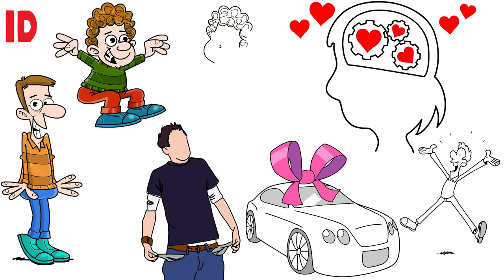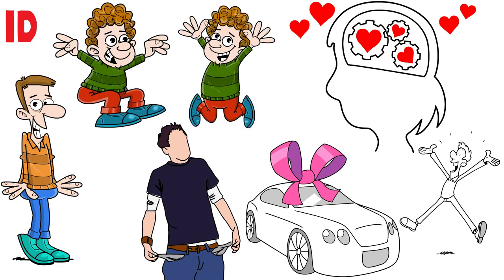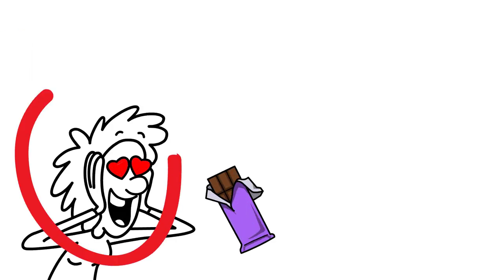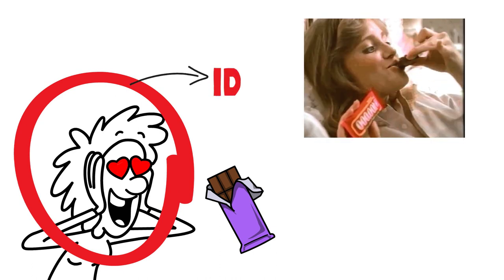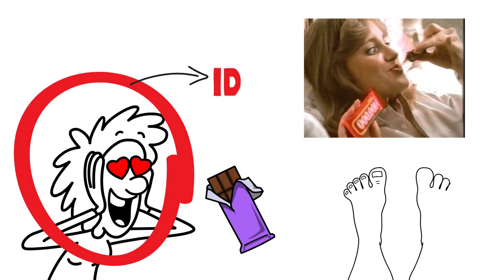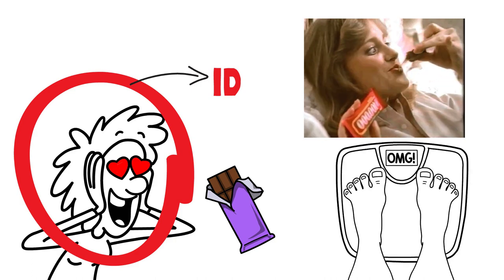Picture it as the impulsive, uninhibited child within you. Think about the last time you craved a piece of chocolate, even when you knew you shouldn't indulge. That intense desire originates from your id, which is constantly pushing for satisfaction without considering long-term consequences, like weight gain or health issues.